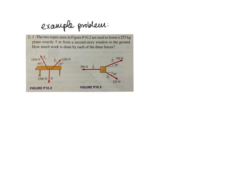So we're going to do an example problem. This is problem two, which includes figure problem 10.2. The two ropes seen are used to lower a 255 kilogram piano exactly five meters from a second story window to the ground. How much work is done by each of the three forces? So we have this. I'm going to redraw some of this picture. We have a tension force. Yeah, the notation in the book is kind of goofy. We have another tension force. And we have the weight force. This is the force of gravity from the earth on the piano.